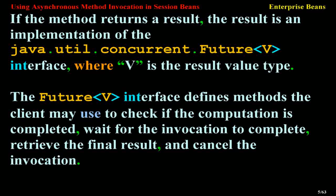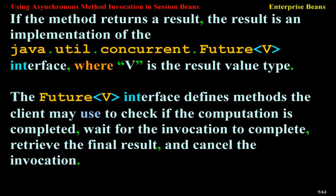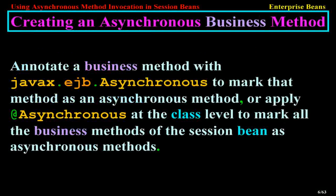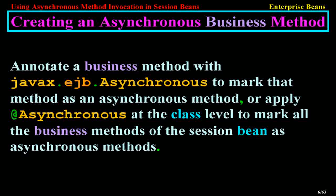The Future<V> interface defines methods the client may use to check if the computation is completed, wait for the invocation to complete, retrieve the final result, and cancel the invocation. To create an asynchronous business method, annotate a business method with javax.ejb.Asynchronous to mark that method as asynchronous, or apply Asynchronous at the class level to mark all business methods of the Session Bean as asynchronous. Session Bean methods that expose a web service can't be asynchronous.